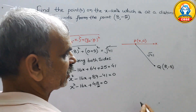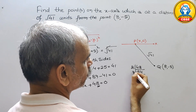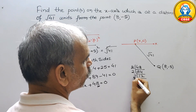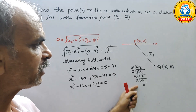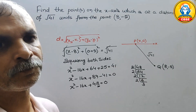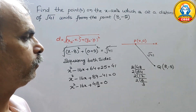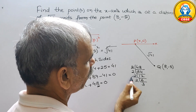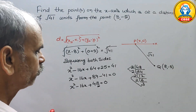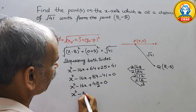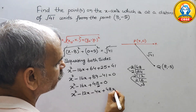48 के factors निकालते हैं: 2×24, 2×12, 2×6, 2×3। आपको इन numbers से 16 बनाना है। तो 16 हम कैसे बनाएंगे: 12 plus 4 is 16, और 12 × 4 = 48। ठीक है।